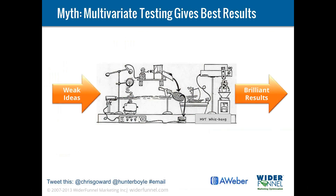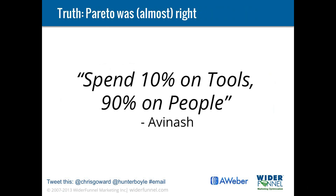Another issue is about tools. There's a lot of talk about multivariate testing and big data, and people are distracted by the technology and the false promise that you can put weak ideas into a tool and come out with brilliant results. That's just not the case. You can't just rely on tools without having a strategy — strategy is critical. As Avinash says, you should spend 10% on tools and 90% on people. Rely on tools with the support of great strategy.